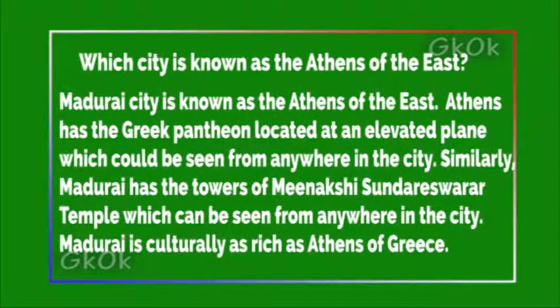Which city is known as the Athens of the East? Madurai city is known as the Athens of the East. Athens has the Greek Pantheon located at an elevated plain, which can be seen from anywhere in the city. Similarly, Madurai has the towers of the Meenakshi Sundareswarar Temple, which can be seen from anywhere in the city. Madurai is culturally as rich as Athens of Greece.